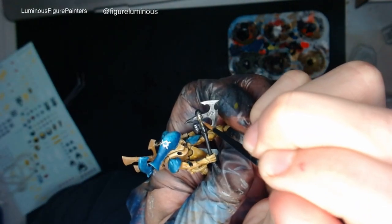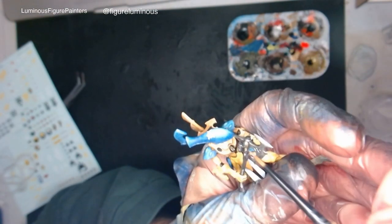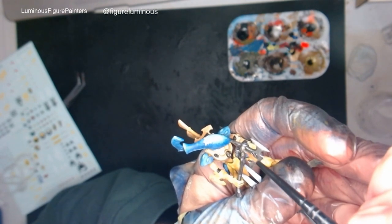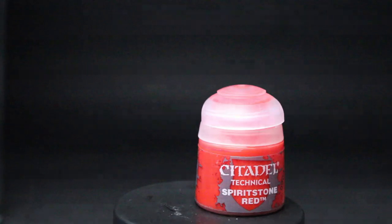Now we will take Vallejo Metal Color Chrome and apply another layer of texture and scratches to the axe and shield, as well as paint the base layer for the gems located on the shield, axe, helmet, and pauldrons.